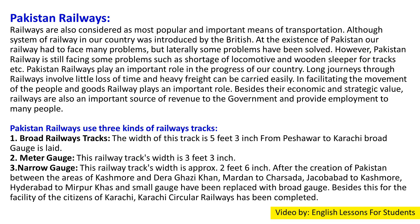In facilitating the movement of people and goods, railways play an important role. Besides their economic and strategic value, railways are also an important source of revenue to the government and provide employment to many people. Pakistan Railways uses three kinds of railway tracks: Broad Gauge — width of 5 feet 3 inches, from Peshawar to Karachi; Metre Gauge — width of 3 feet 3 inches; and Narrow Gauge — width of approximately 2 feet 6 inches. After the creation of Pakistan, between areas such as Kashmour and Dera Ghazi Khan, Mardan to Charsadda, Jacobabad to Kashmore, and Hyderabad to Mirpurkhas, narrow gauge lines have been replaced with broad gauge.